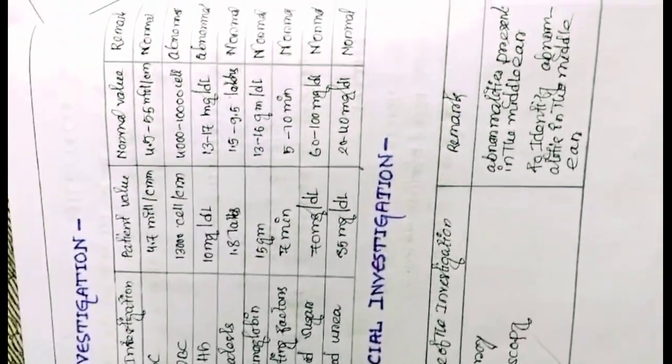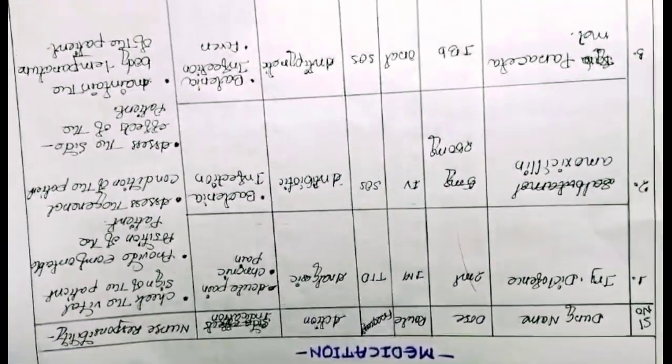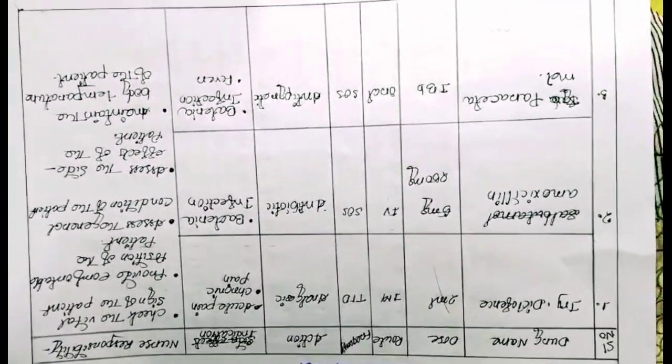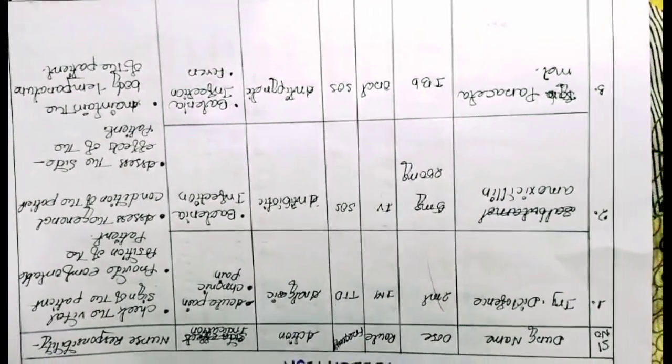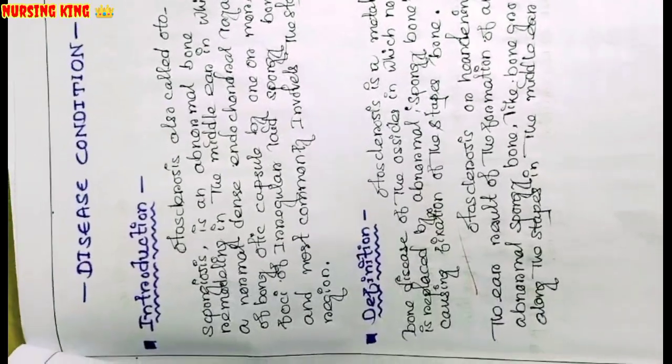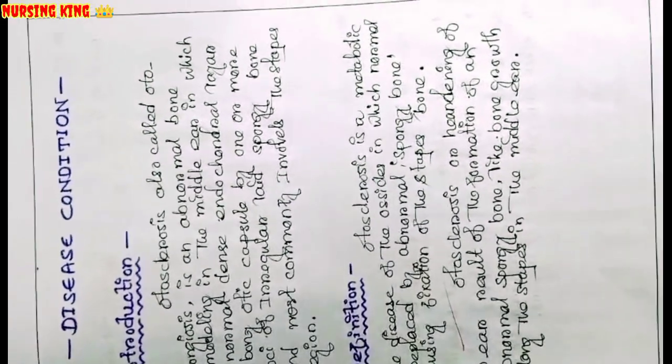After that, investigation and special investigation. Any routine investigation is there or not, you have to write. Then medication section - in that medication, write the drug name, dose, route, and frequency.